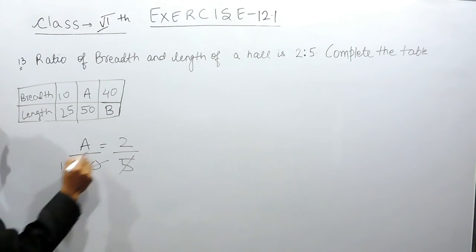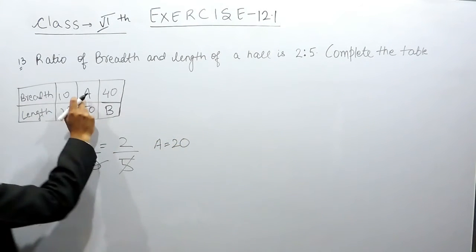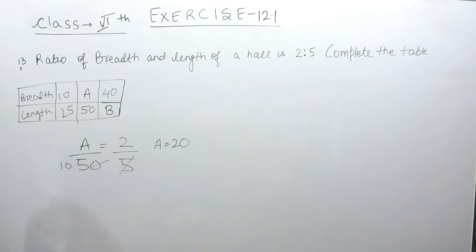So, 10 times 50 and 10 into 2 is 20. So A will equal 20. This value will be 20.